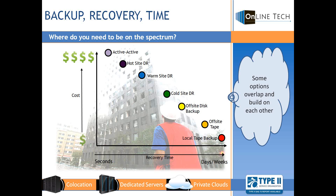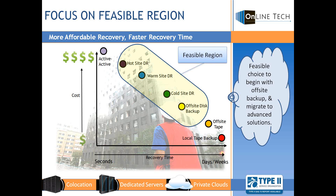Many companies run in the bottom right zone, using tape backup, maybe with off-site backup. While tape has been a great backup method for years, many customers don't regularly test their data backup and restoration procedures, and this puts them at great risk. Online Tech feels a great place to start and focus on is a solid backup plan in the feasible region. Here in the yellow feasible region, we start off with off-site tapeless backup, illustrated in the yellow zone.